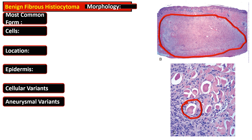Histologic variants include a cellular variant with dense cellular population, and an aneurysmal variant with pools of extravascular blood and hemosiderin. There is a tendency of fibroblasts to surround individual collagen fibers or collagen bundles, as seen in this picture.